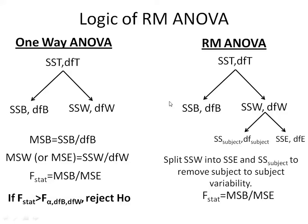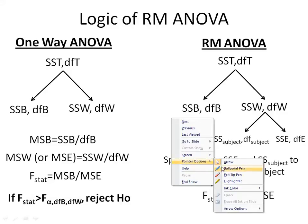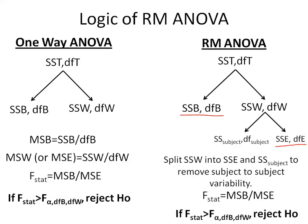We calculate the F statistic using mean squared error between subjects, which is SSB divided by DFB, divided by mean squared error, which is SSE divided by its degrees of freedom. Again, if the F statistic is greater than the F critical value, we reject the null hypothesis.